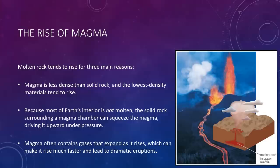Molten rock tends to rise for three main reasons. First, molten rock is generally less dense than solid rock, and lower density materials tend to rise when surrounded by high density materials. Second, because most of Earth's interior is not molten, the solid rock surrounding a chamber of molten rock—a magma chamber—can squeeze the molten rock, driving it upward under pressure. And third, molten rock often contains trapped gases that expand as it rises, which can make it rise much faster and lead to dramatic eruptions.